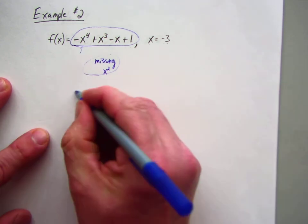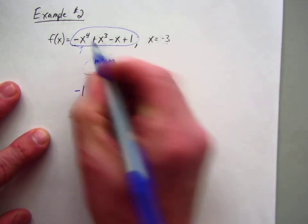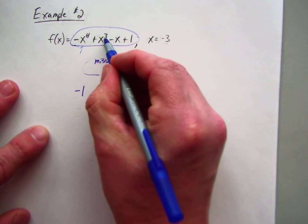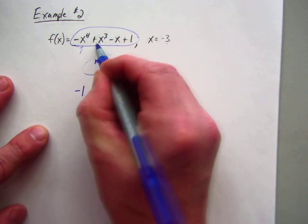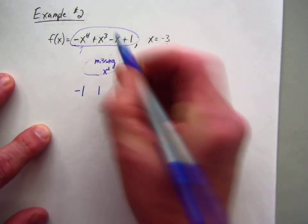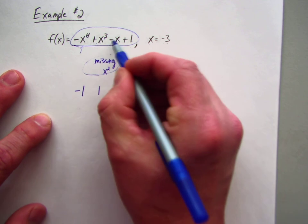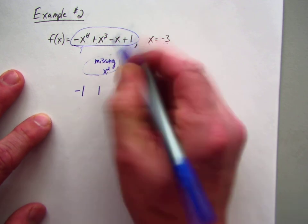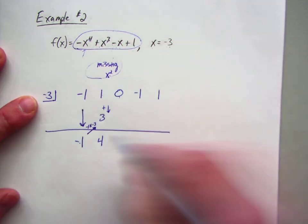So the very first term, its coefficient is negative 1. Then the cubic, the coefficient here is positive 1. Now we're supposed to go to a quadratic, an x squared term, which isn't there. So what I have to do is put a 0.